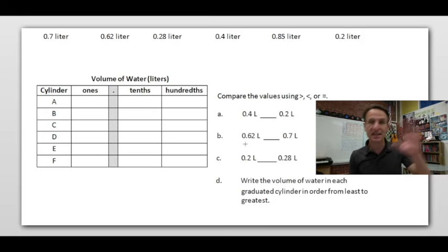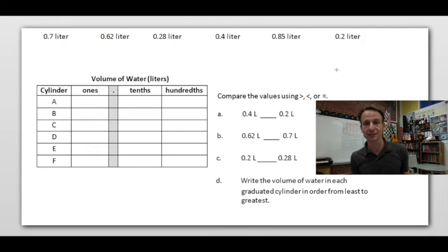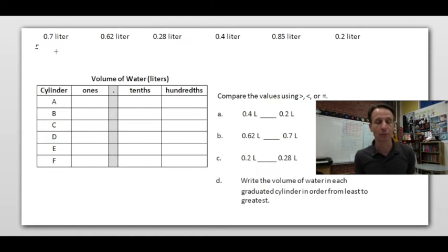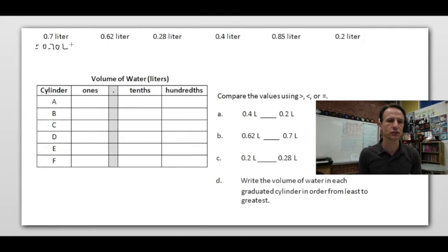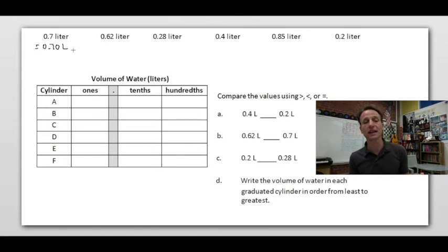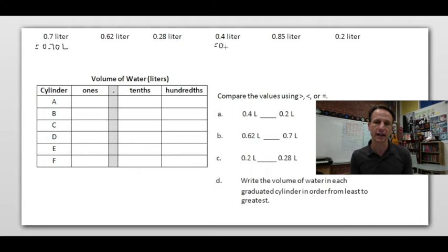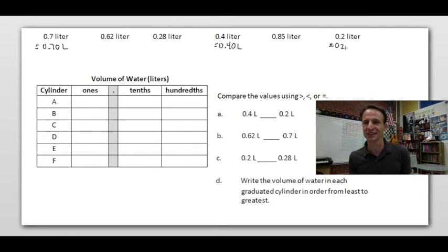Before getting into the questions, I'll rewrite the tenths values as hundredths for clarity. Seven tenths equals 70 hundredths liters. Note: the word 'liter' uses a lowercase L, but the abbreviation is a capital L so it isn't confused with the number one. Four tenths equals 40 hundredths liters. Two tenths equals 20 hundredths liters. That'll help with comparisons.